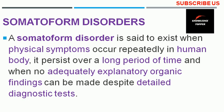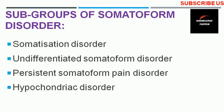Talking about the subgroups of somatoform disorders, the first subgroup is somatization disorder. In this type of disorder, there is simultaneous manifestation of symptoms in different parts of the human body — for example, pain in multiple body parts, gastrointestinal problems, menstruation problems, dizziness, a feeling of blockage in the throat, and muscle weakness. According to the ICD-10 system, the duration of this disorder is specified as two years.